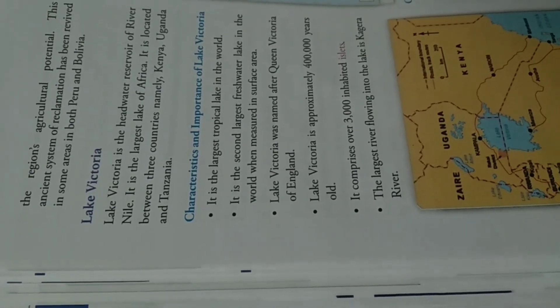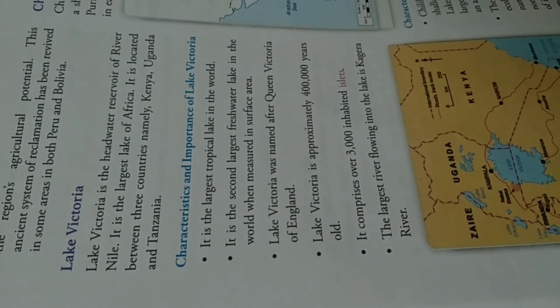Lake Victoria is the largest lake of Africa. It is located between Uganda, Tanzania, and Kenya. Now let us learn about the characteristics and importance of Lake Victoria.